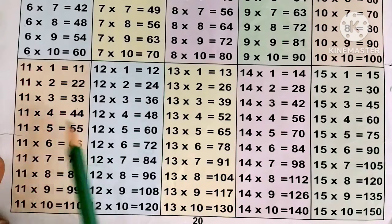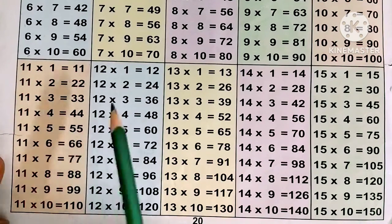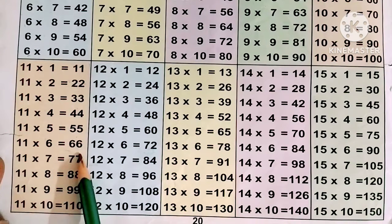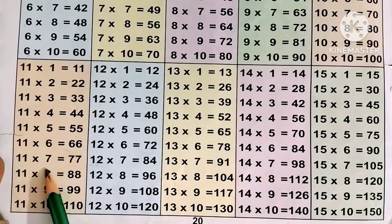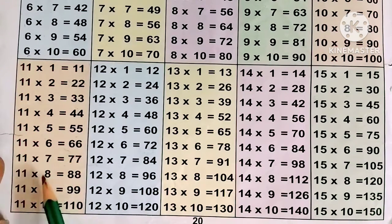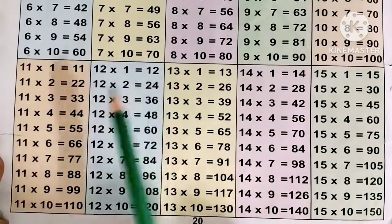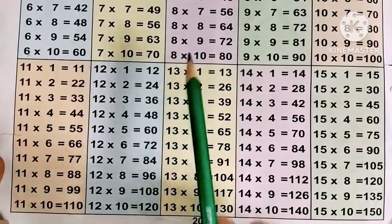Now the 11 times table. 11 fives are 55, 11 sixes are 66, 11 sevens are 77, 11 eights are 88, 11 nines are 99, 11 tens are 110.